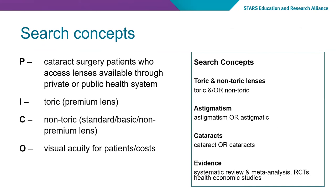The search concepts break down again from our PICO. You can see that our population have astigmatism and cataracts, and we are looking at toric or non-toric lenses. When we look at the evidence, we are looking at systematic reviews, meta-analyses, randomised controlled trials, and health economic studies.